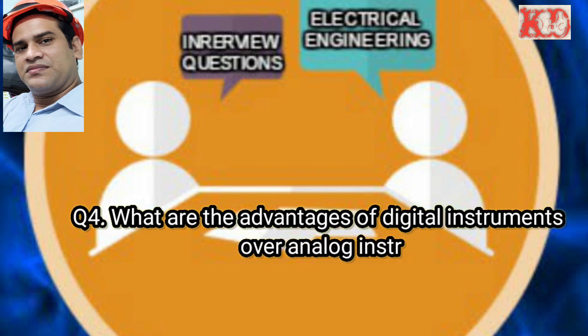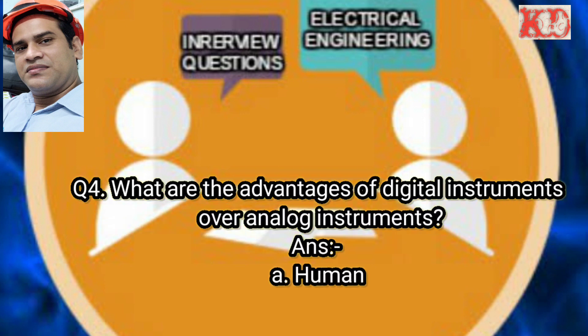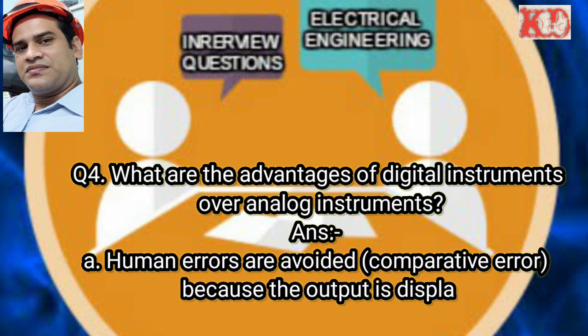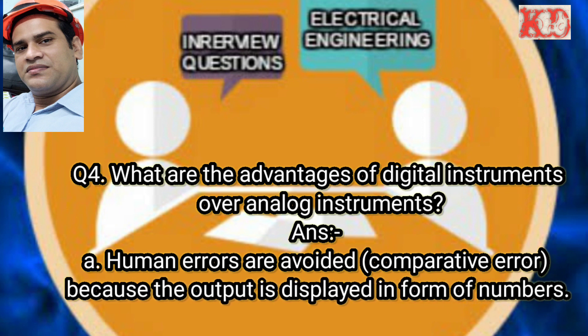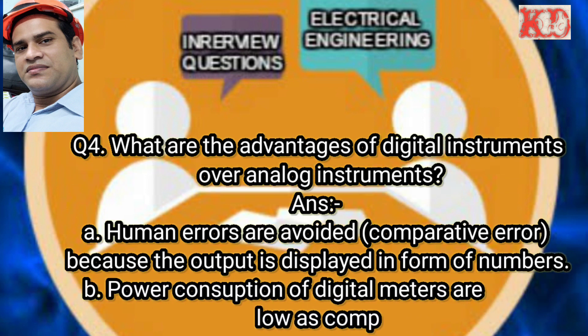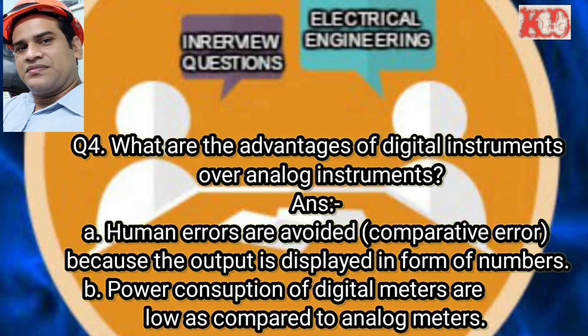Question number four: What are the advantages of digital instruments over analog instruments? Answer: first, human errors are avoided because the output is displayed in the form of numbers. Second, power consumption of digital meters is low as compared to analog meters.